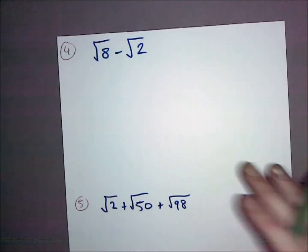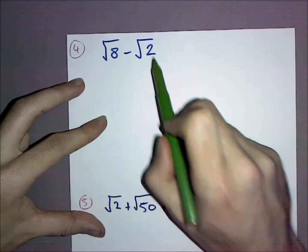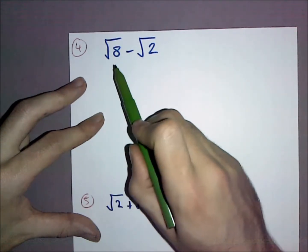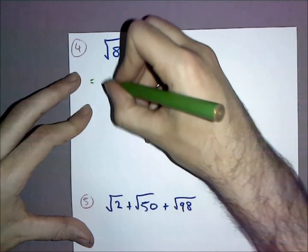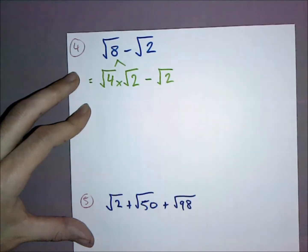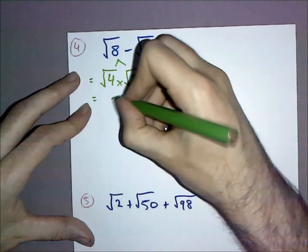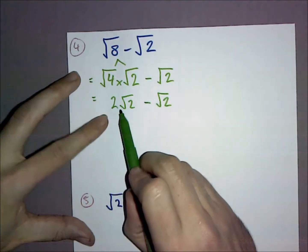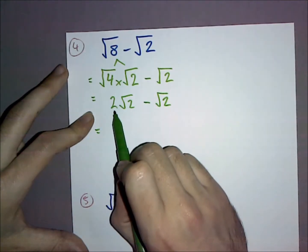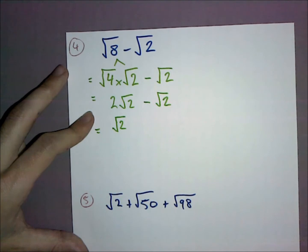On first inspection, √8 - √2 doesn't look like they're the same, but we need to check if we can simplify because more often than not you'll be able to subtract them. I can break down √8 into √4 × √2. The square root of 4 is 2, so it's 2√2. Now it's 2√2 - √2. You can see they're like terms, so 2√2 - √2 = √2.